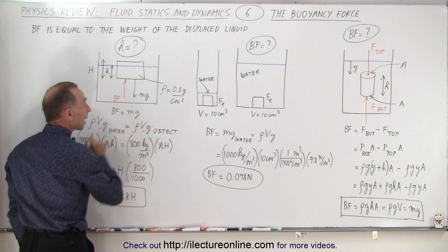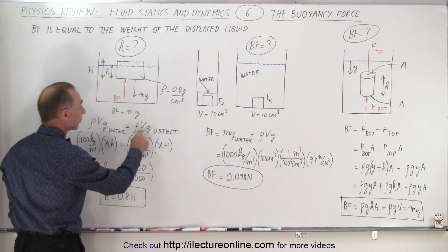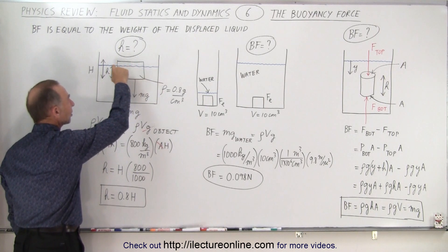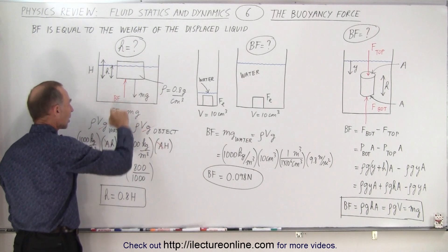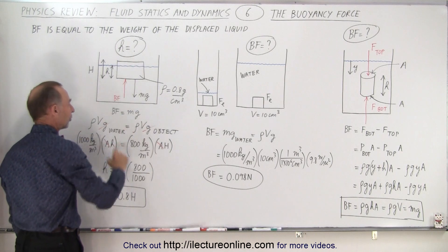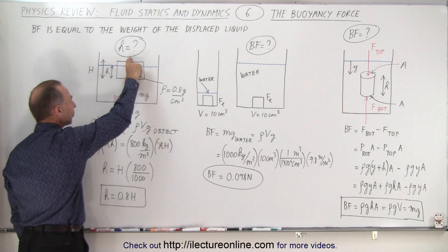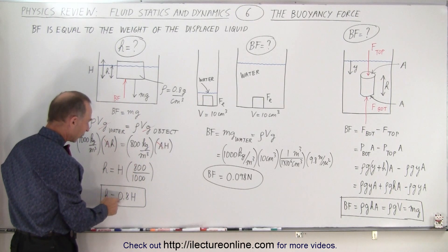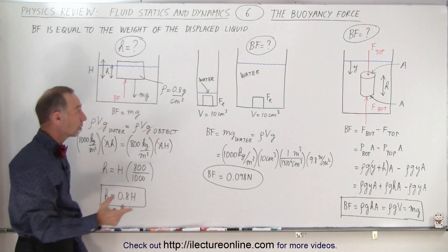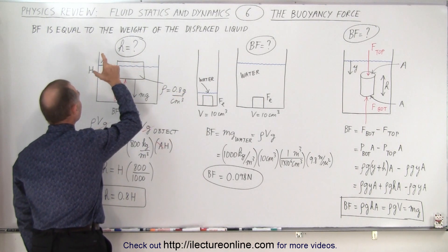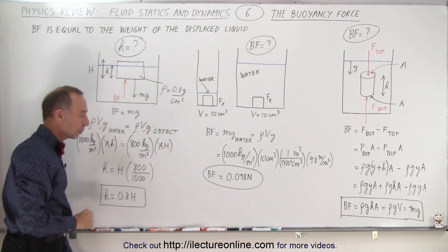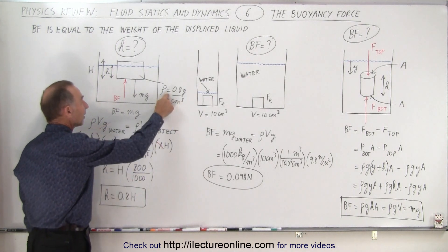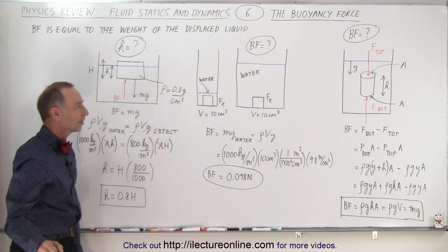That is equal to the weight of the object. We take the full volume of the object and only the volume of the displaced liquid, which is the cross-sectional area times the height below the surface, versus the cross-sectional area times the full height. When we set them equal, we find that the height below the surface equals 0.8, which is the ratio of the density of the object divided by the density of the liquid. So the portion below the surface equals the density of the object divided by the density of the liquid.